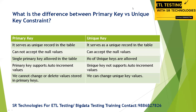When it comes to unique key, it also does the same thing — it serves as a unique record in the table. However, a primary key cannot accept null values, but a unique key will allow null values. Now, in a table, how many primary keys can be placed?